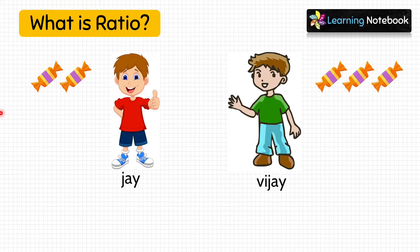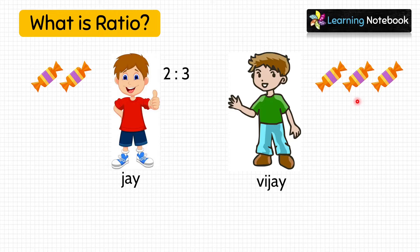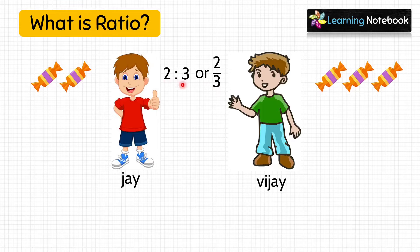So the ratio of number of chocolates Jai got to number of chocolates Vijay got is written as 2 is to 3, or we can say 2 divided by 3. So this ratio 2 is to 3 describes number of chocolates Jai got to number of chocolates Vijay got.